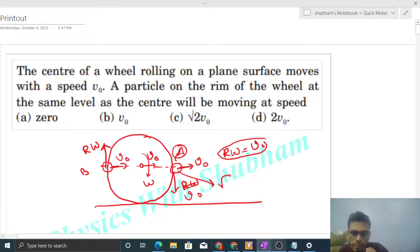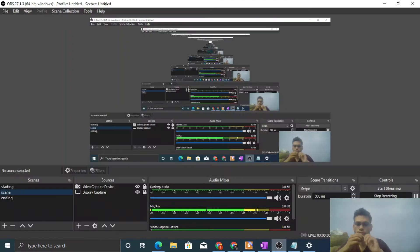So r omega you can take as v0 again. So v0 and v0 at 90 degrees, that will be square root of 2 times v0. Similarly, this will also be square root of 2 times v0 at an angle of 45 degrees with the horizontal, one upward and one downward.